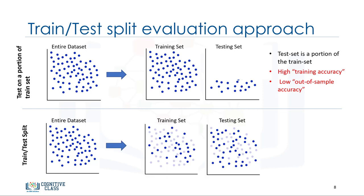This will provide a more accurate evaluation on out-of-sample accuracy because the testing data set is not part of the data set that has been used to train the data. It is more realistic for real-world problems. This means that we know the outcome of each data point in the data set, making it great to test with. And since this data has not been used to train the model, the model has no knowledge of the outcome of these data points. So, in essence, it's truly out-of-sample testing. However, please ensure that you train your model with the testing set afterwards as you don't want to lose potentially valuable data.